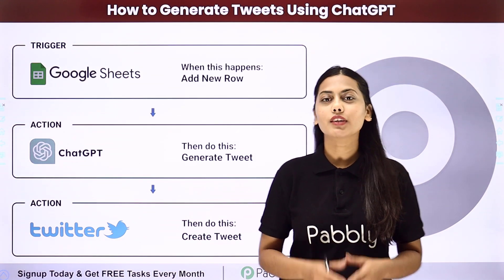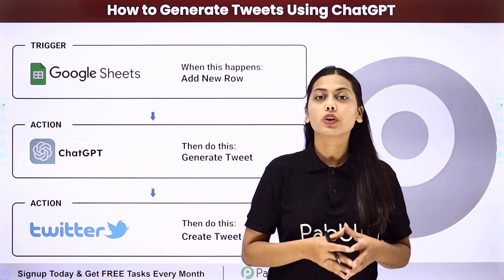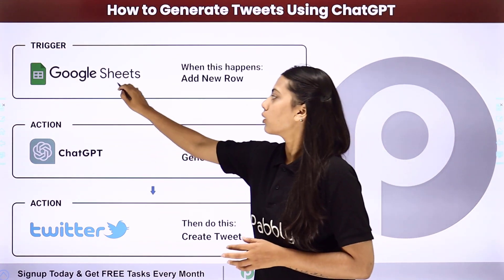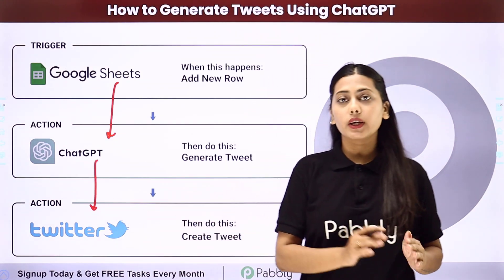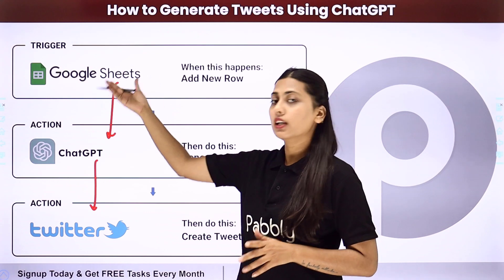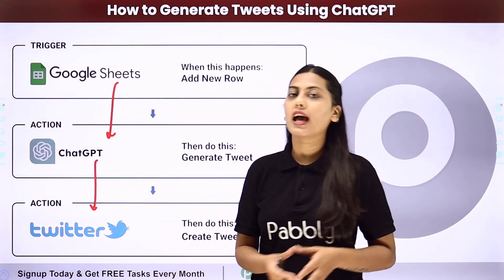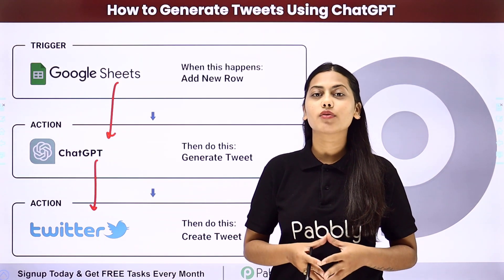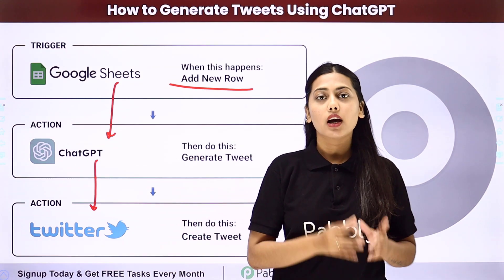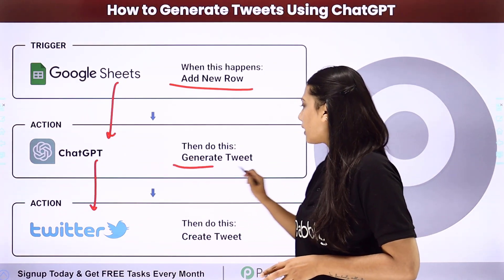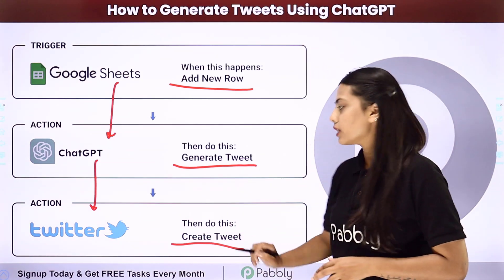Hello everyone. In this video we will learn how to generate tweets using ChatGPT. We are going to learn how to integrate three applications: Google Sheet, ChatGPT, and Twitter, so that you take the title and link from Google Sheet, generate content using ChatGPT, and then post that content on your Twitter account as a tweet. In this automation created using Pabbly Connect, our trigger will be adding a new row in Google Sheet, our first action will be to generate a tweet using ChatGPT, and our last action will be to create a tweet on Twitter.